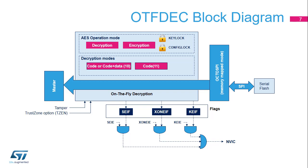Any access outside the enabled OTF-DEC regions belongs to a non-encrypted region. As OTF-DEC is used in conjunction with OctoSPI, it is mandatory to access the flash memory using the memory map mode of the flash controller. In the region configuration register, the mode bits define the OTF-DEC operating mode — standard or enhanced encryption.